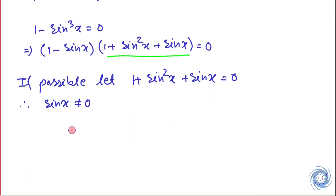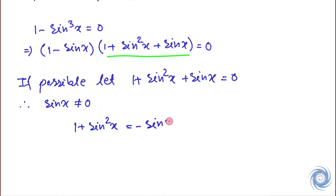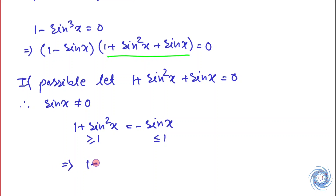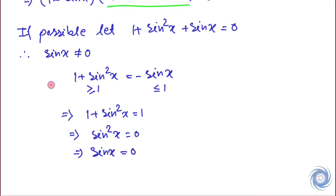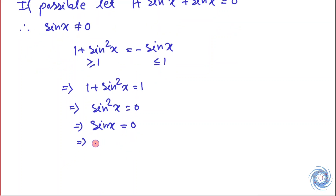Now from this equation we have 1 + sin²x equals minus sin x. Note that the left-hand side is positive and is greater than or equal to 1. The right-hand side, minus sin x, is always less than or equal to 1 because sin x lies in [−1, 1]. So this is less than or equal to 1, meaning equality happens only when 1 + sin²x equals 1. This implies sin²x equals zero, so sin x equals zero. But this gives a contradiction, because we established that sin x is not equal to zero.